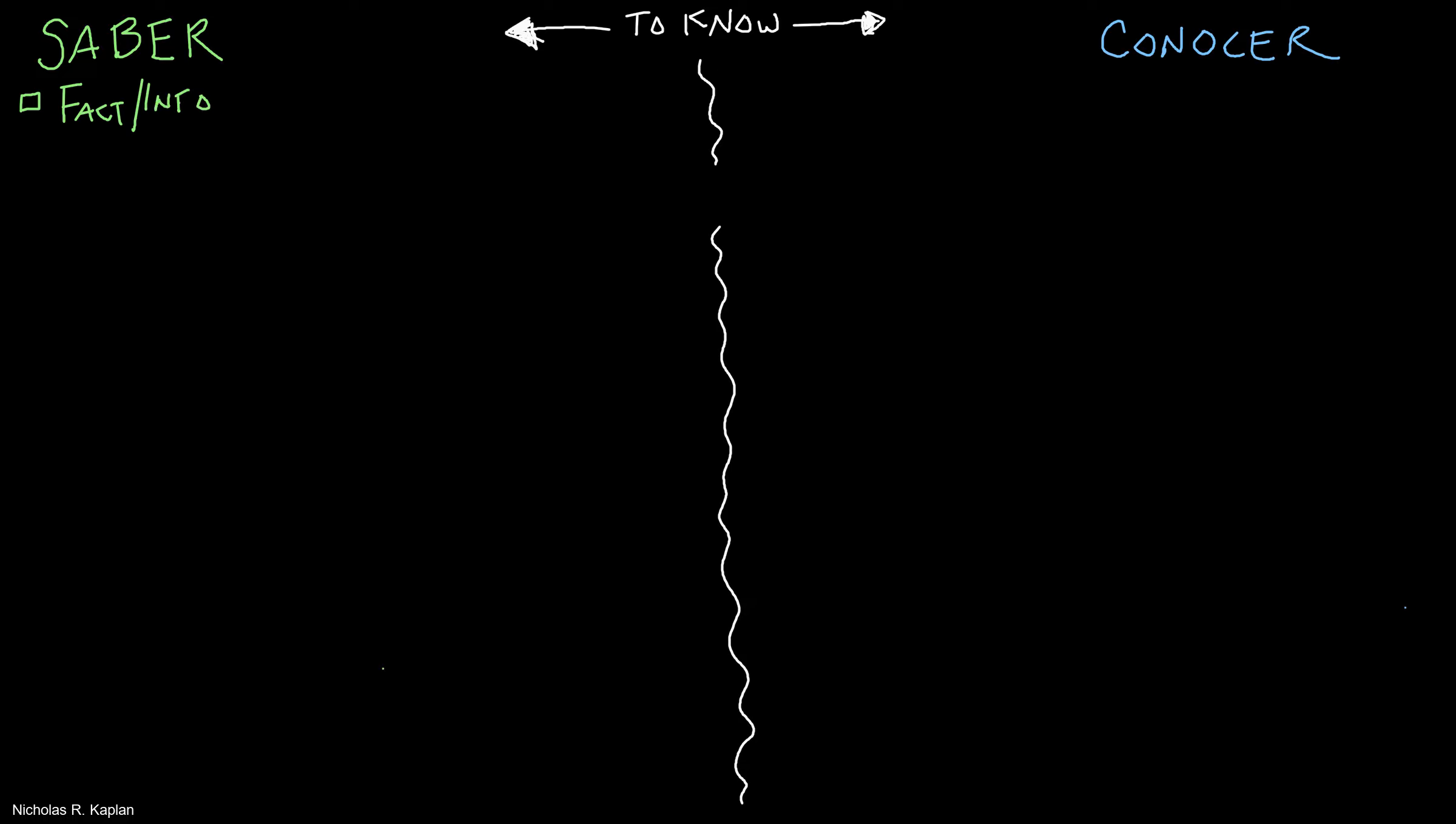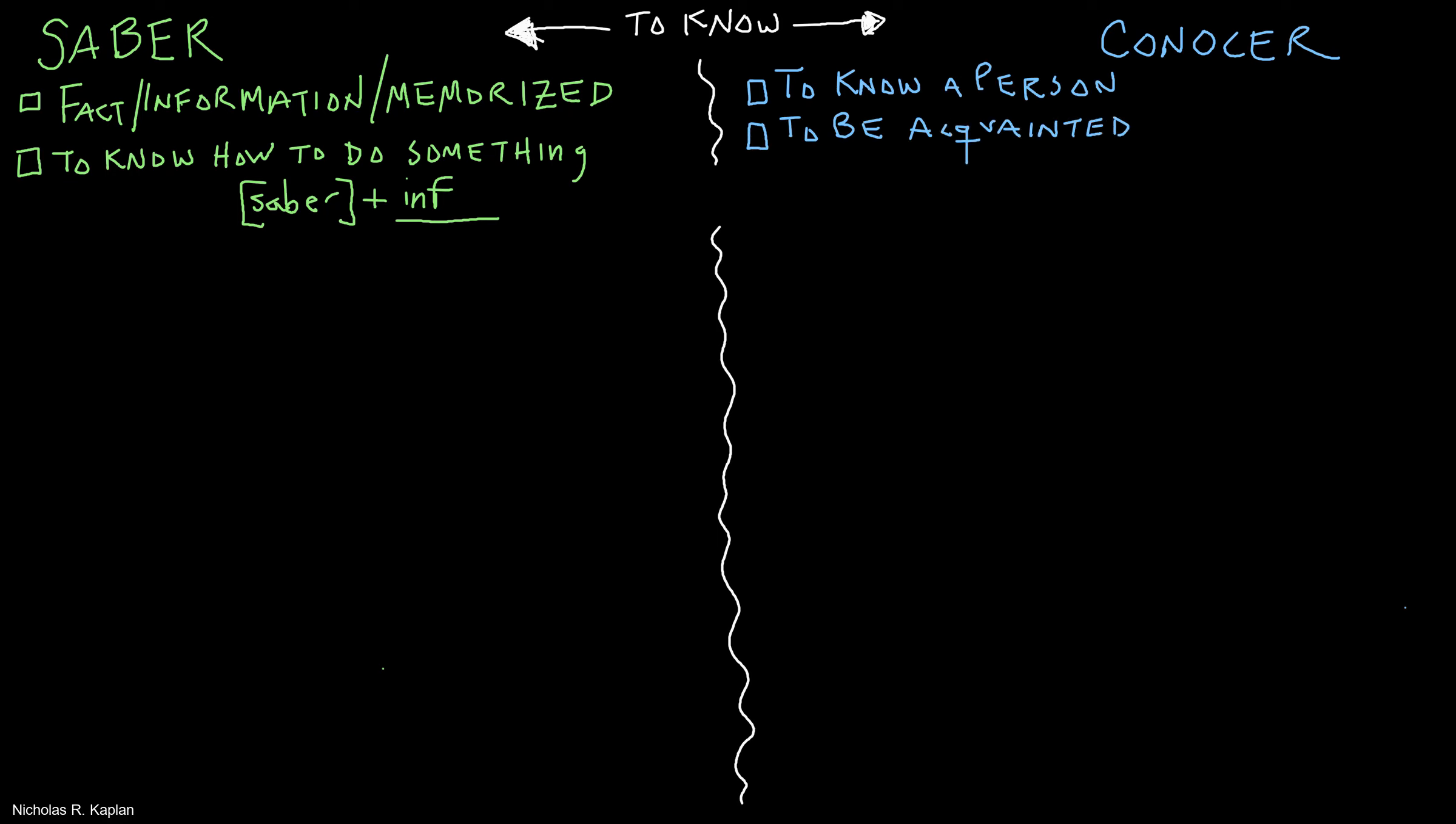Saber means to know a fact, information, or something memorized. Or if you add saber plus an infinitive, it means to know how to do something. We'll give some examples in a minute. Conocer is to know a person, or to be acquainted with a person, place, or thing. To be acquainted with a place generally means you've been there. We'll give an example in a second.